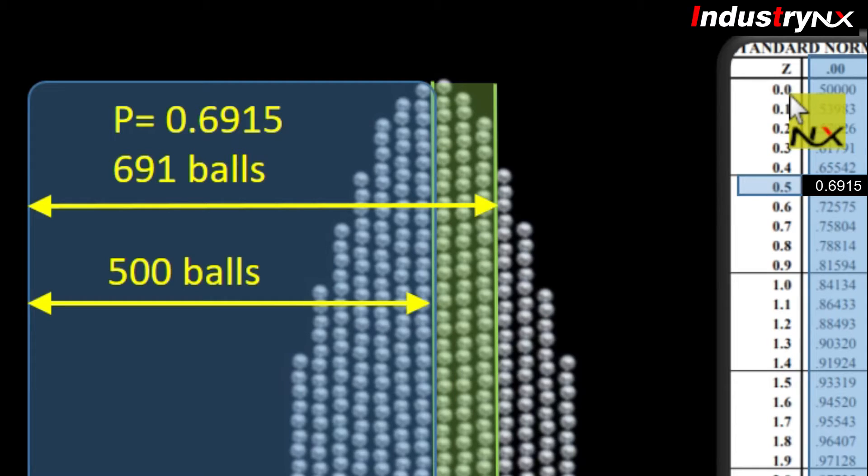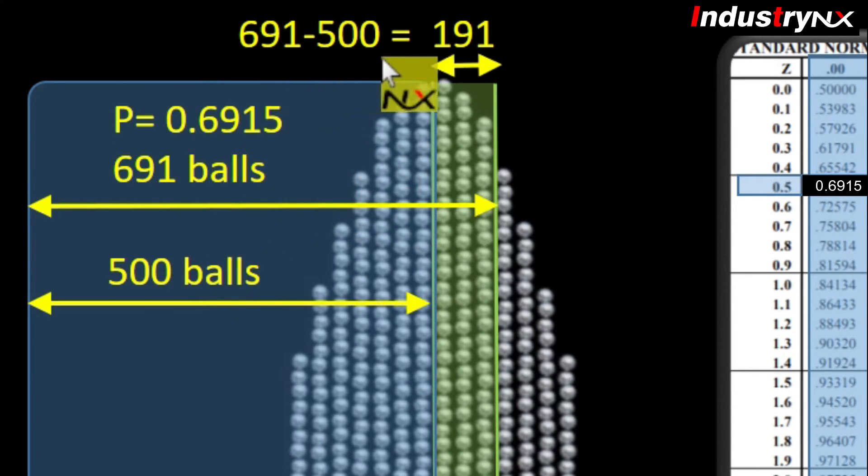If z equals to 0, then p-value is 0.5, that is 50%. If we subtract 500 from 691, then we will get answer to our given problem, that is 191.